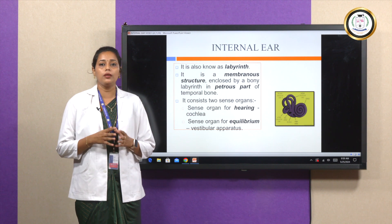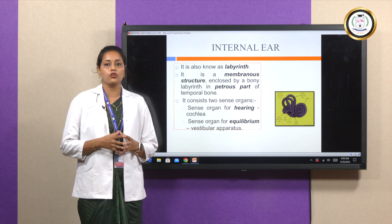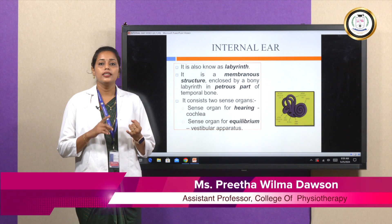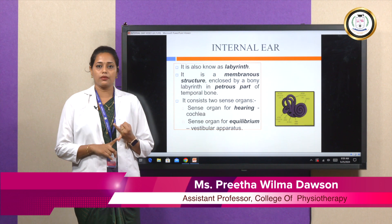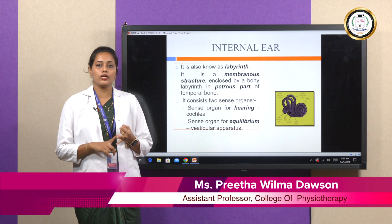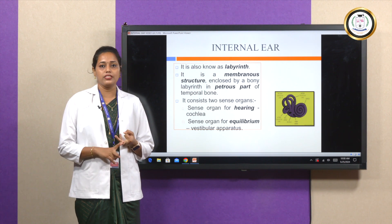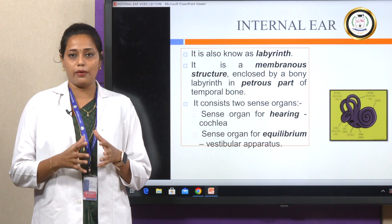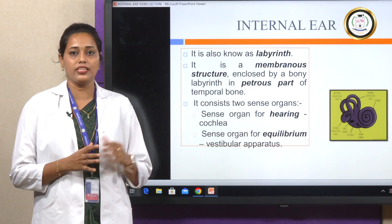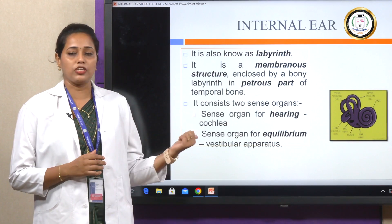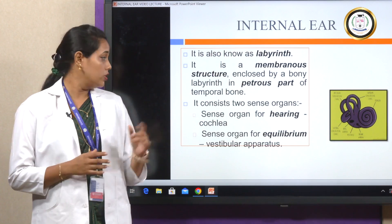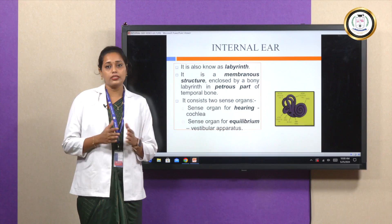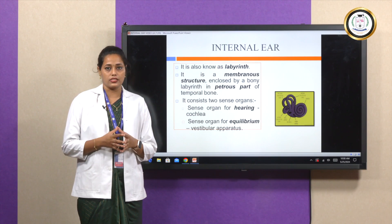The temporal bone consists of four distinct osseous segments: the tympanic segment, mastoid segment, petrous segment, and squamous segment. This bony labyrinth is present in the petrous part of the temporal bone and consists of two sense organs.